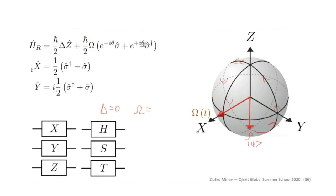For example, by setting theta to pi/2, we get the X operator corresponding to a rotation around the x-axis. Similarly, we can adjust theta and the time duration to produce a rotation about the y-axis. By combining these rotations around different axes, we can implement different quantum gates — operators on the quantum state — including X, Y, Z, and the Hadamard operator, which imposes superposition.